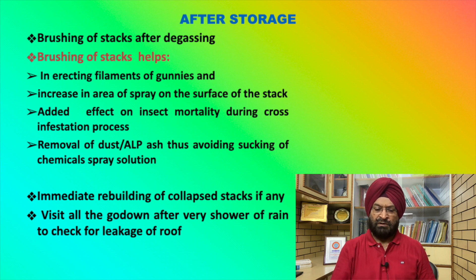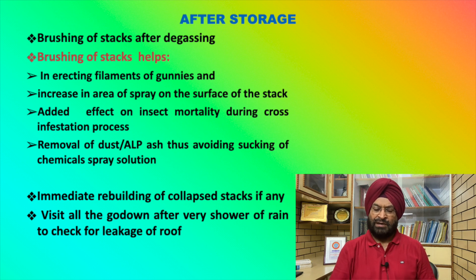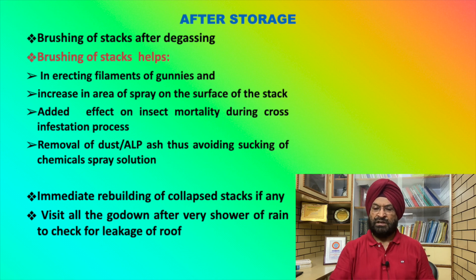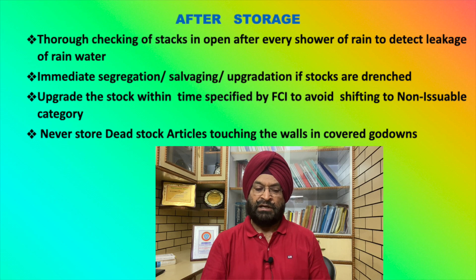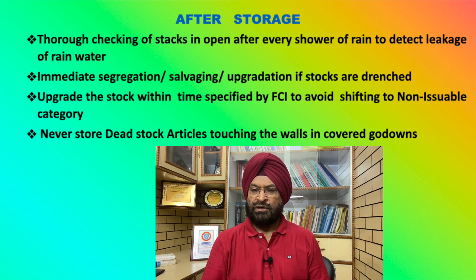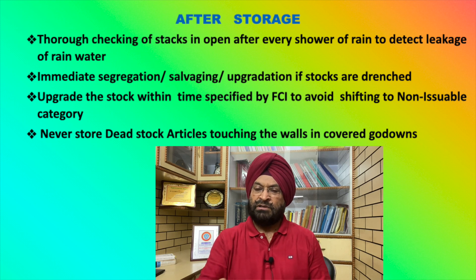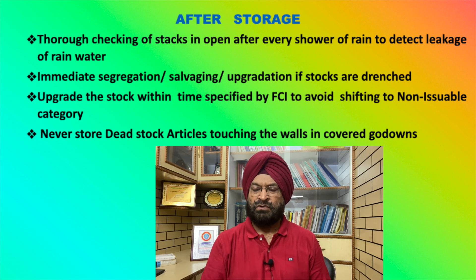ALP ash must be removed after fumigation, otherwise it will absorb the chemical and waste it — that is the key benefit of brushing. Carry out immediate rebuilding of the capsheet; do not wait. Visit all godowns and storage complexes after every shower of rain to check for leakage. Carry out thorough checking of stacks by opening covers to detect any leakage or hot spot. Immediately segregate, salvage, or upgrade affected stock; do not wait or it will lead to cake formation. Upgradation of stock must be done within the time frame provided by the FCA, otherwise the FCA has power to convert the stock into the damaged or non-issuable category.